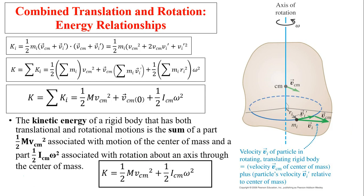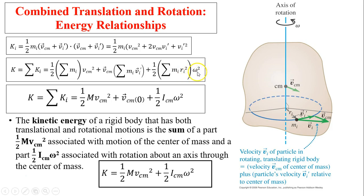To combine the translation and rotation energy relationship and find total energy, we look at the energy of one particle, which equals one-half m_i times v_i squared. The velocity v_i of a particle in a rotating, translating rigid body equals the velocity of the center of mass plus the particle's velocity relative to the center of mass. After multiplying this out and adding all the kinetic energies, since v center of mass is the same for all particles we can factor it out. We also know v_i prime equals r times omega, and omega is the same for all particles, so we can factor omega out as well.